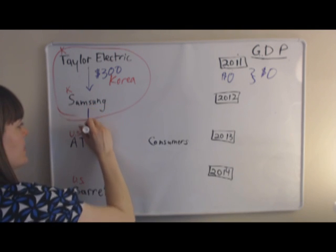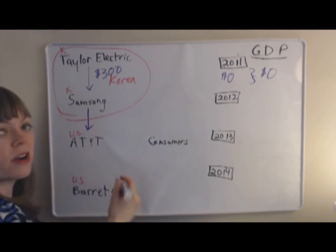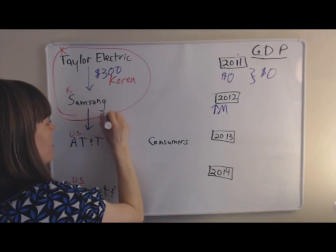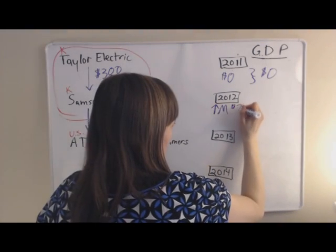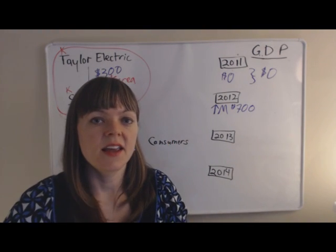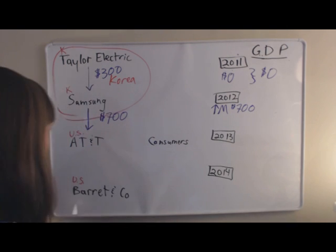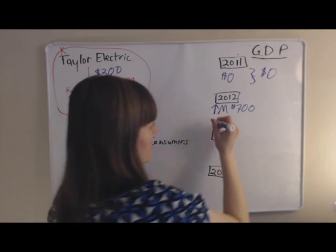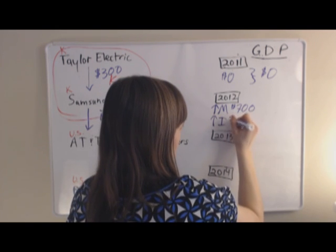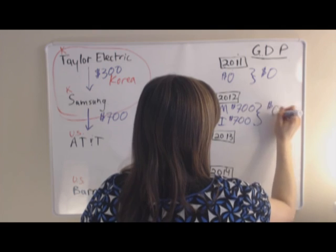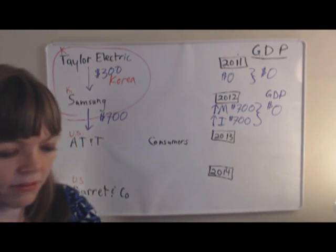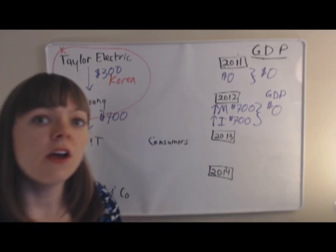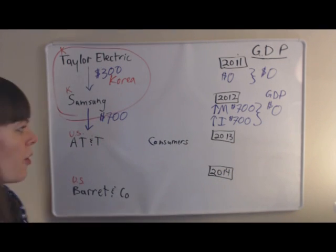In 2012, Samsung sells to AT&T. We're crossing a border, so it's either exports or imports. Since it's coming into the U.S., it's an import — increase in imports of $700. Anytime we have an import, we counterbalance it with investment, consumption, or government spending. AT&T is a company, so this is an increase in inventories, which is investment, of $700 — netting out to zero GDP. Nobody physically located in the U.S. created any value in 2012, so we're happy GDP is zero.